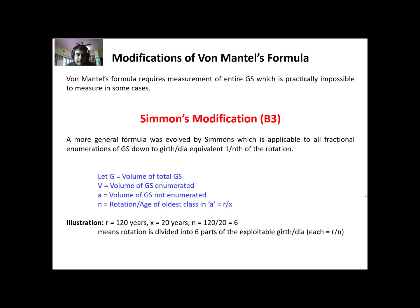Simmons told that it should not be strictly one half of the rotation. We can have the growing stock enumerated to any portion of the age class or diameter. For that we define: G as the total growing stock, V as the volume of growing stock that is enumerated, A as the volume of growing stock that is not enumerated, and N is rotation divided by age of the oldest class, that is N = R/X.